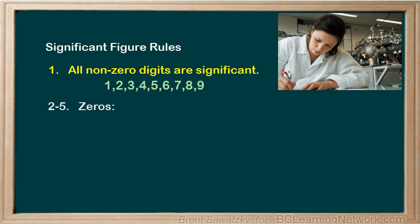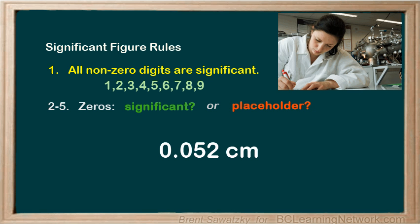So what we need to determine is, for each zero, is it significant or is it just a placeholder? For example, if we have the number 0.052 centimeters, we look at it and say, well, we know for sure that the five and the two are both significant — that's rule one. So we just have to think about the zeros. Now, this zero was needed to show that it was a small number. There's no way to show how small a number is without writing the decimal and the zero here. It doesn't make the number any more accurate — it's just a placeholder telling us about the magnitude of the number, nothing about its accuracy.